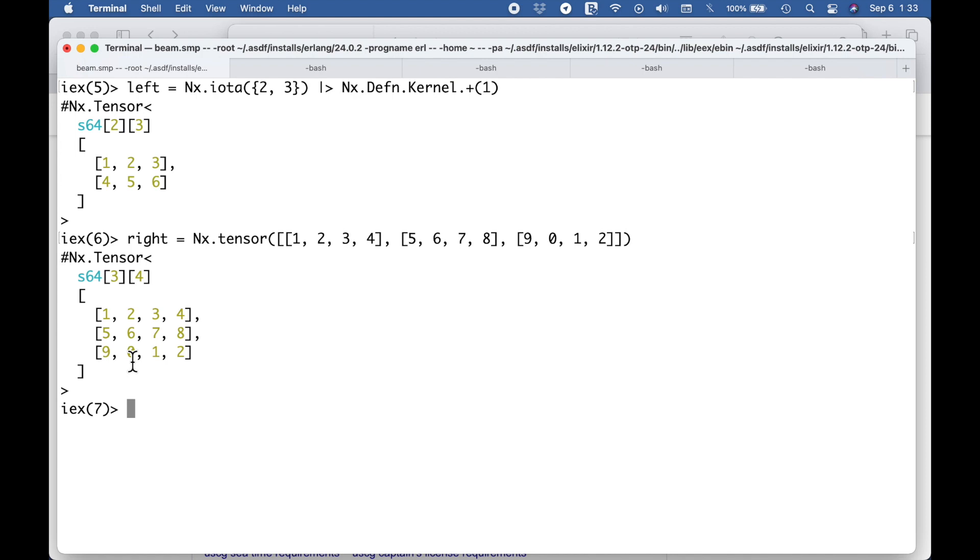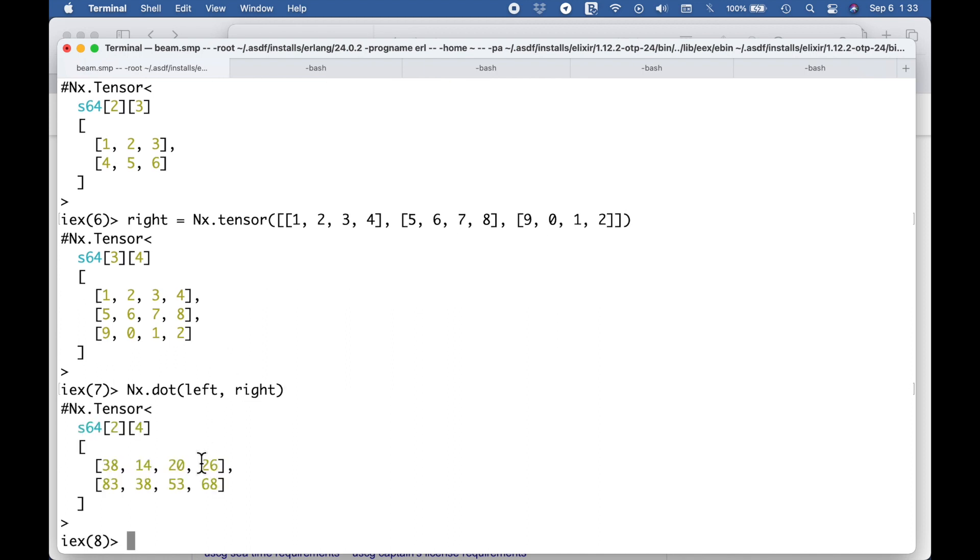So these are the two tensors that we have in the example. And so I ought to be able to say nx.dot for dot product, and I ought to be able to add left and right. So the dot product result, if we're right, should be two rows and four columns. Let's see if we get it. So we get two rows and four columns.